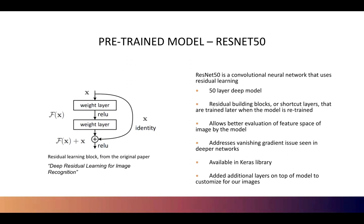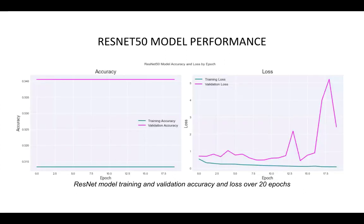ResNet-50 is currently available in the Keras library. We added additional layers on top of the model to customize it for our images. Despite our efforts to improve accuracy and mitigate loss, the model demonstrated limited improvement, plateauing around an accuracy of approximately 31% across both training and validation datasets. The loss fluctuated but remained relatively high throughout training, indicating challenges in effectively learning from the data.